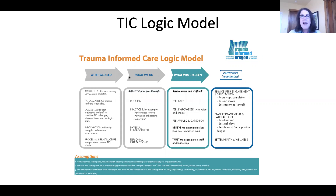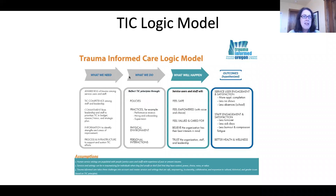This logic model is laid out in a typical fashion — if this, then this, then that. The first box is really what is needed for trauma-informed care. With this in place, the next box talks about what individuals and agencies do to demonstrate trauma-informed care. Following this is what we hypothesize will change as a result — trauma-informed care changes to policy, practice, environment, and relationships. This represents the felt experience of trauma-informed care. The final box includes the hypothesized outcomes that are likely associated with trauma-informed care. Elements within this diagram are being researched and empirical evidence is starting to accumulate.